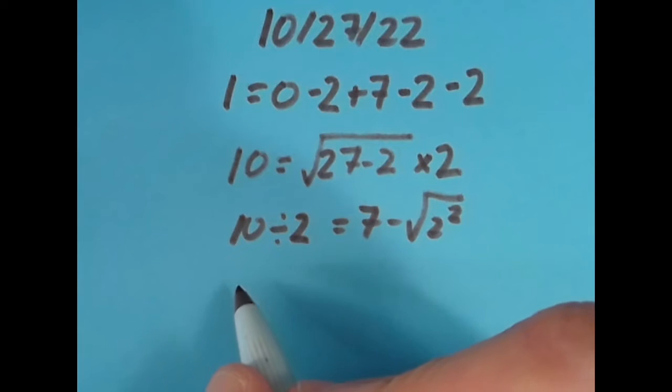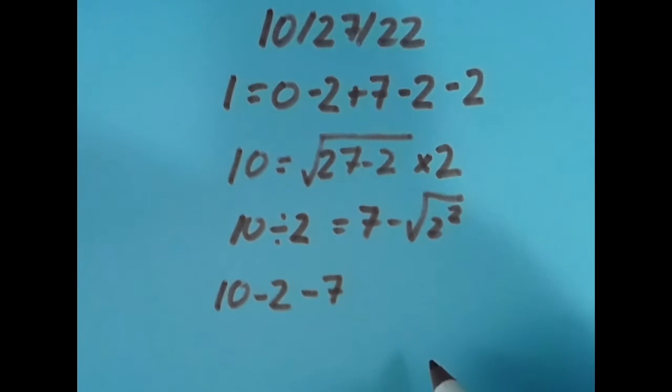To move the equal sign over one more spot to the right, I get that 10 - 2 is 8, 8 - 7 is 1, and so is 2 ÷ 2.